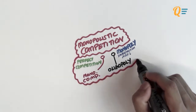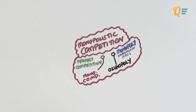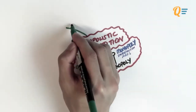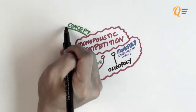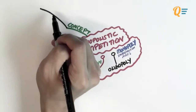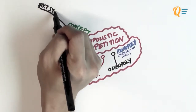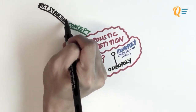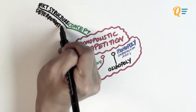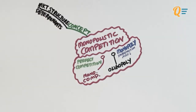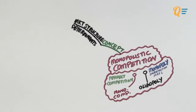The characteristics of monopolistic competition are pretty much the same as perfect competition, except for a few distinct differences. Let's look at the concept of monopolistic competition and check out what are the market structure determinants.